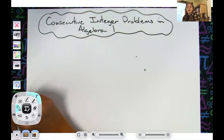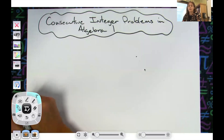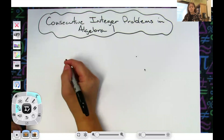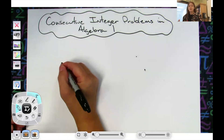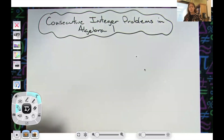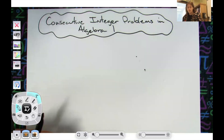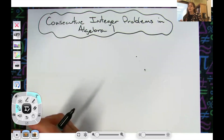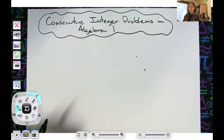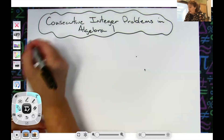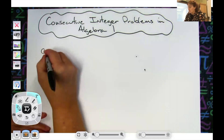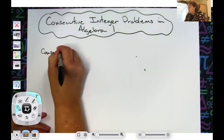In this video we're going to be taking a look at some consecutive integer problems. These type of problems are typically found in an Algebra 1 class. The story problems are going to be set up so that you're either working with consecutive integers, consecutive odd integers, or consecutive even integers. We're going to take a look at each of those and see what it looks like when we define those variables.